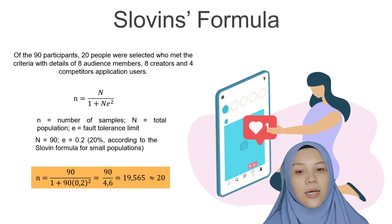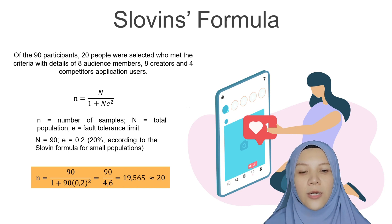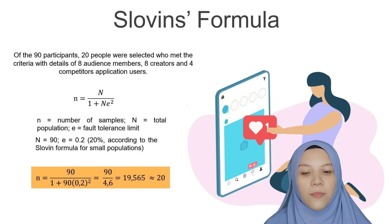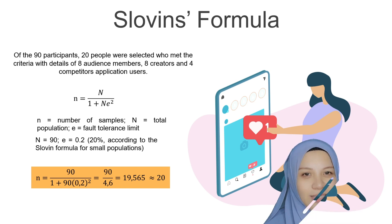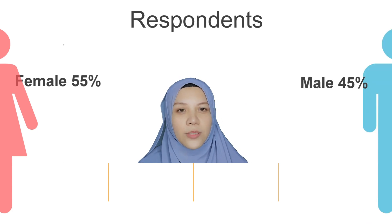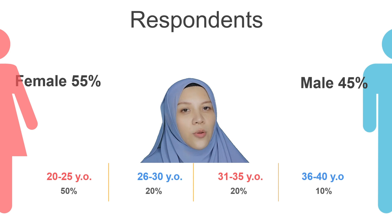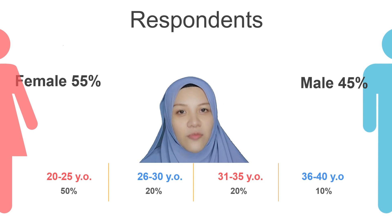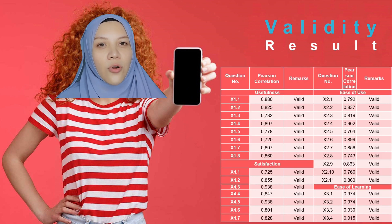Because the total number was large — around 90 participants — we used Sloven's formula, which gave us 20 participants using an error rate of 20%. We got respondents of 55% female and 45% male. For age, the dominant group was 20 to 25 years old, making up about half, with the rest spread across three other age groups.